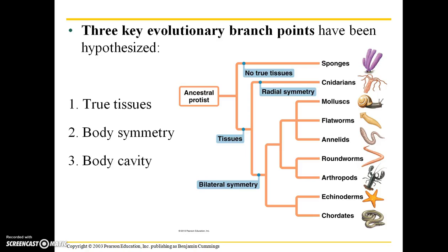There are three key evolutionary branch points hypothesized in animal evolution. The first was the advent of true tissues. The second is the evolution of body symmetry, and the third is the advent of a body cavity. Sponges, which are very primitive animals, do not have true tissues, but all other branches of animals do. Cnidarians are the only animals with radial symmetry and the rest have bilateral symmetry.